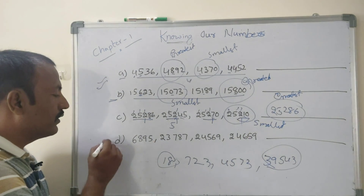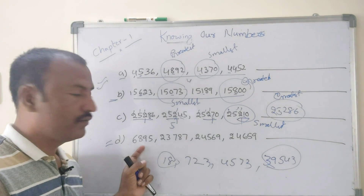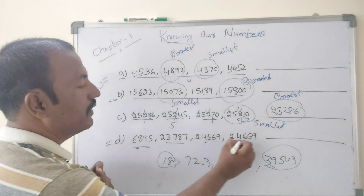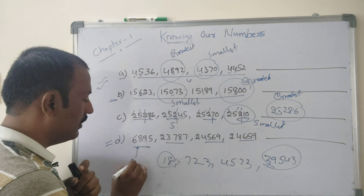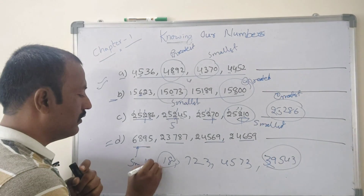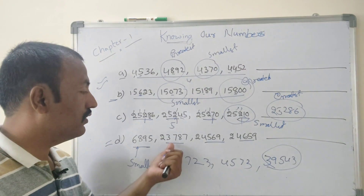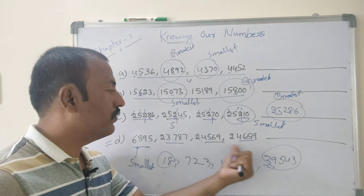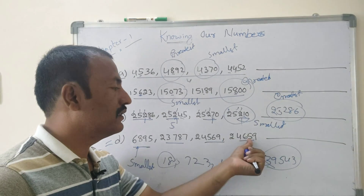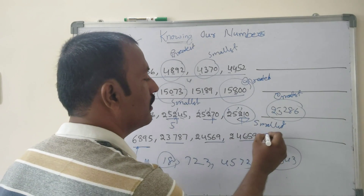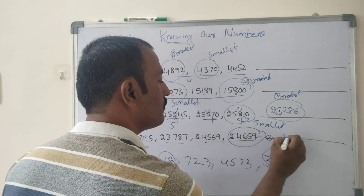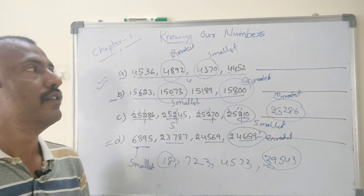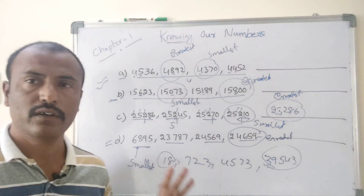One more example: 6895, 23000 — a 4-digit number versus 5-digit numbers. Automatically, the 4-digit number is the smallest. Among the 5-digit numbers, comparing at 100th place: 500 and 600 — automatically 680 is the greatest. This is about the comparison of numbers.